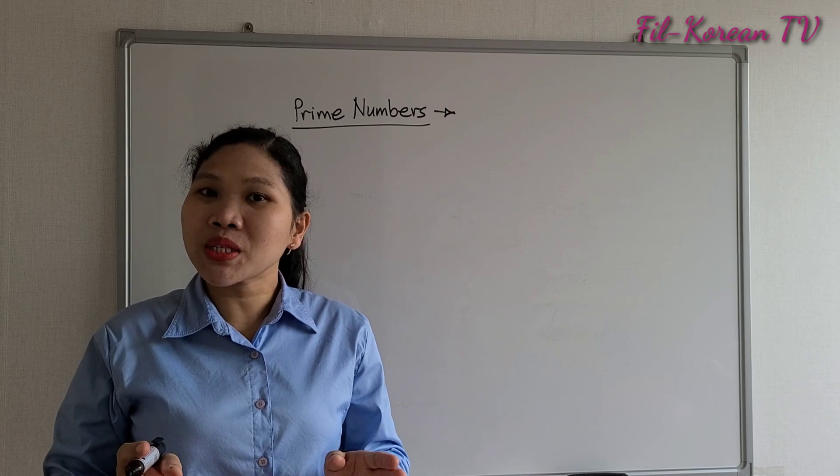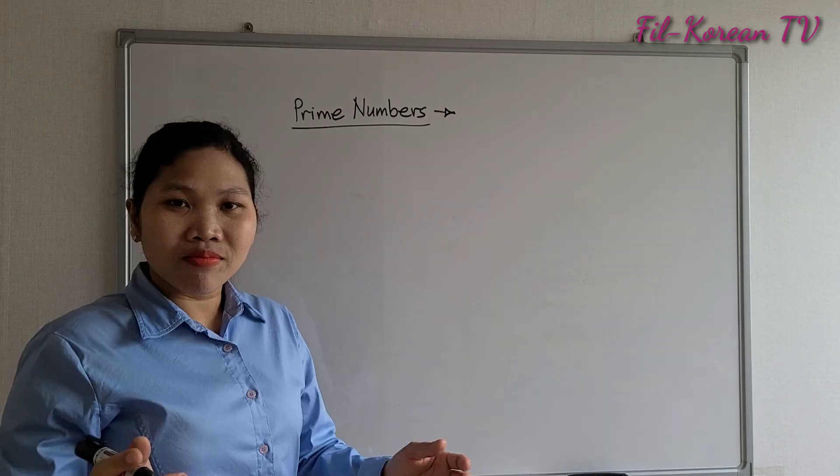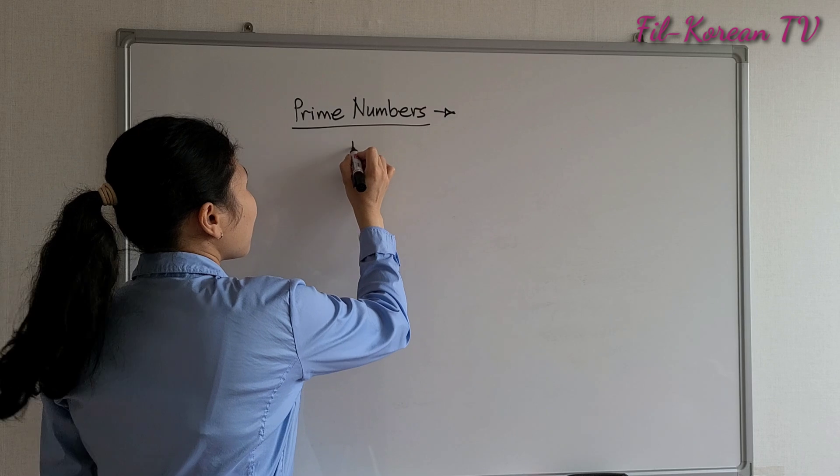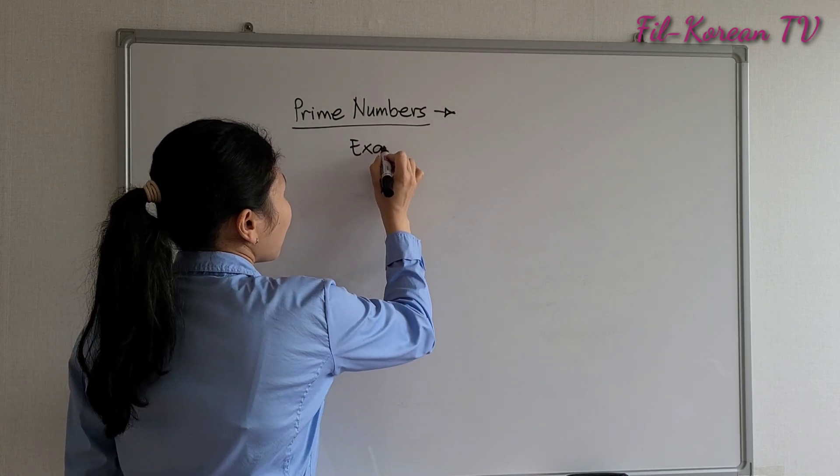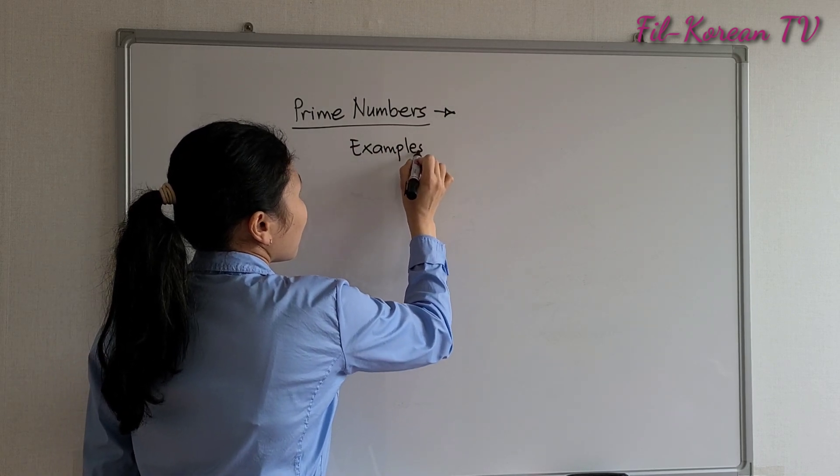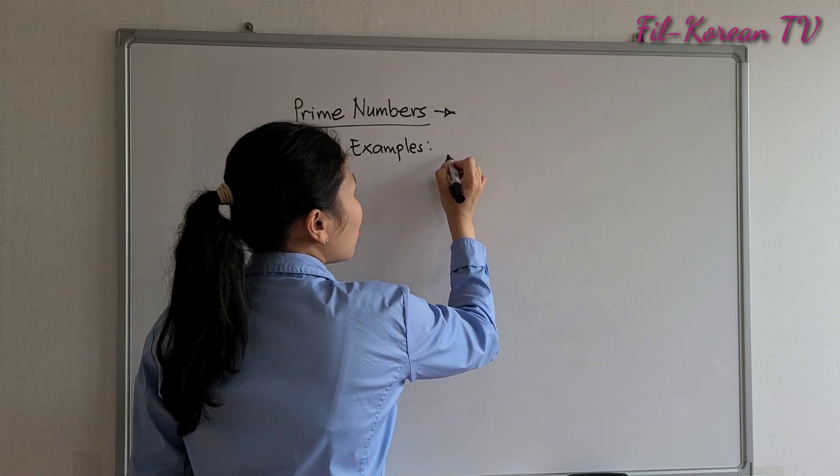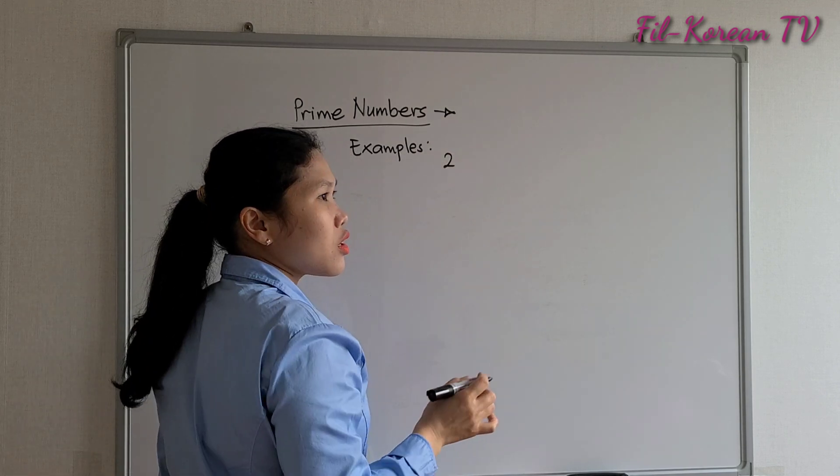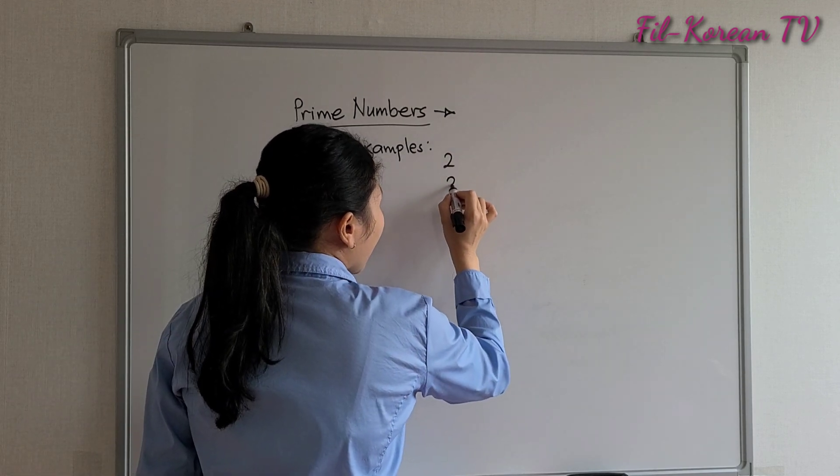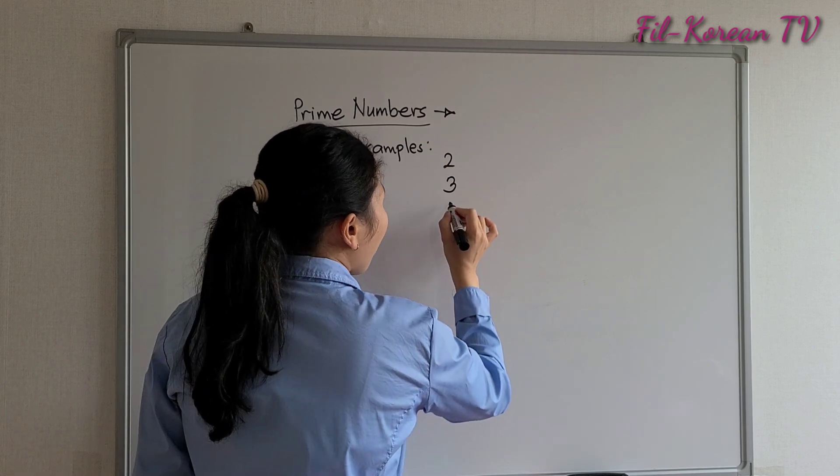Prime numbers have only two factors. Examples: two, three, five.